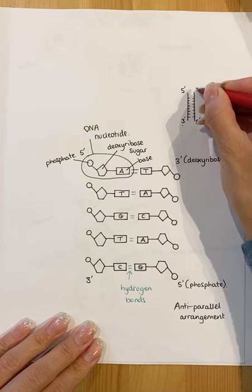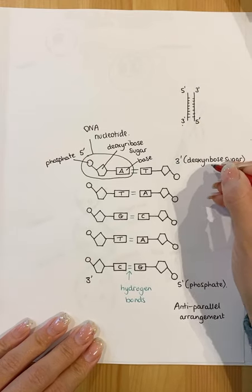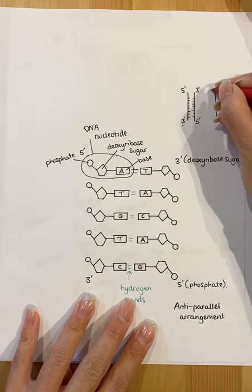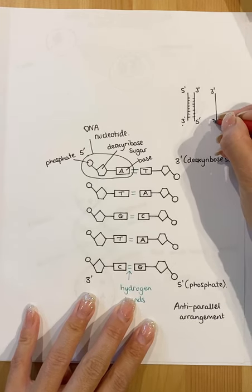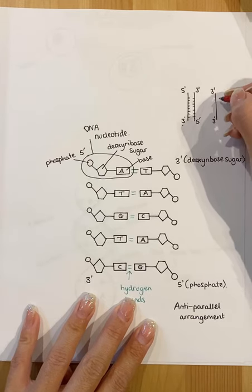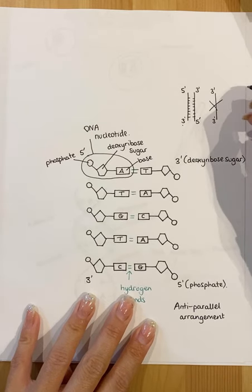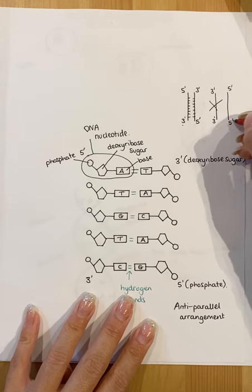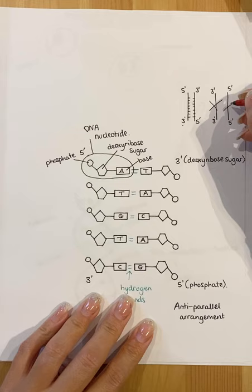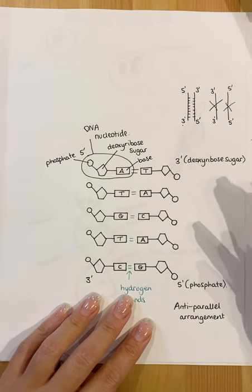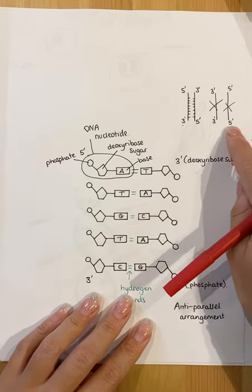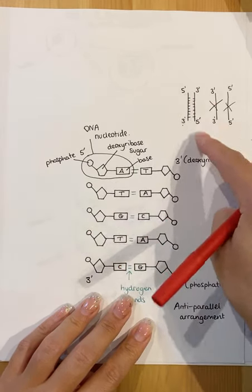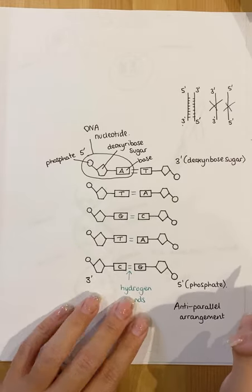This end should be five prime, and therefore this end should be three prime. You will never see a molecule of DNA that ends with a three and then another three. You would never see that, and you would also never see a molecule that ends with a five and a five on the same strand either. These are incorrect. You always have to have a three in one end and a five in the other.